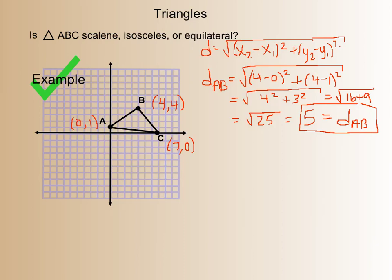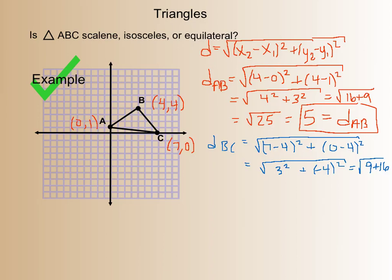All right, so now let's switch to a different color, and let's find the distance of B, C. Okay, so again, square root, 7 minus 4 squared. That's my two x coordinates. My y coordinates, 0 minus 4 squared. This gives me 7 minus 4 is 3 squared plus negative 4 squared. So 9 plus 16, which again is square root of 25, which equals 5. So the distance from B to C is 5.